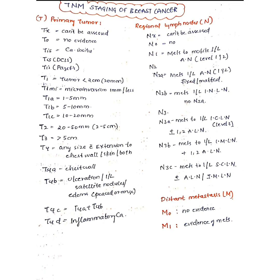T2 is 20 to 50 mm (2 to 5 centimeters). T3 is more than 5 centimeters. T4 is any size but with extension to the chest wall, skin, or both. T4a involves the chest wall; T4b involves the skin, which can cause ulceration, satellite nodules, or peau d'orange. T4c is both T4a and T4b combined, and T4d is inflammatory carcinoma.